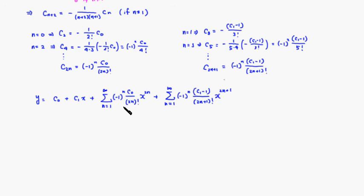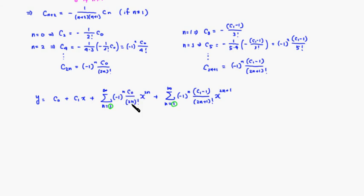We can see that the even series is almost cosine and the odd series is almost sine, but they start from n equals 1. We want to start from n equals 0. When n equals 0, the even series contributes negative 1 to the 0 times c0 over 0 factorial times x to the 0, which equals c0. Luckily c0 is already sitting as the first term.